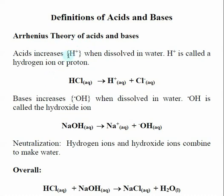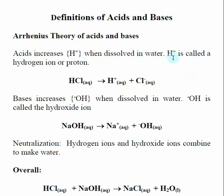In the Arrhenius theory, an acid puts H+ when dissolved in water. H+ is called the hydrogen ion or a proton. Hydrogen as a single element is a proton and an electron, so if we remove that one electron, all we have left is a proton — literally H+ is a proton floating around the solution.